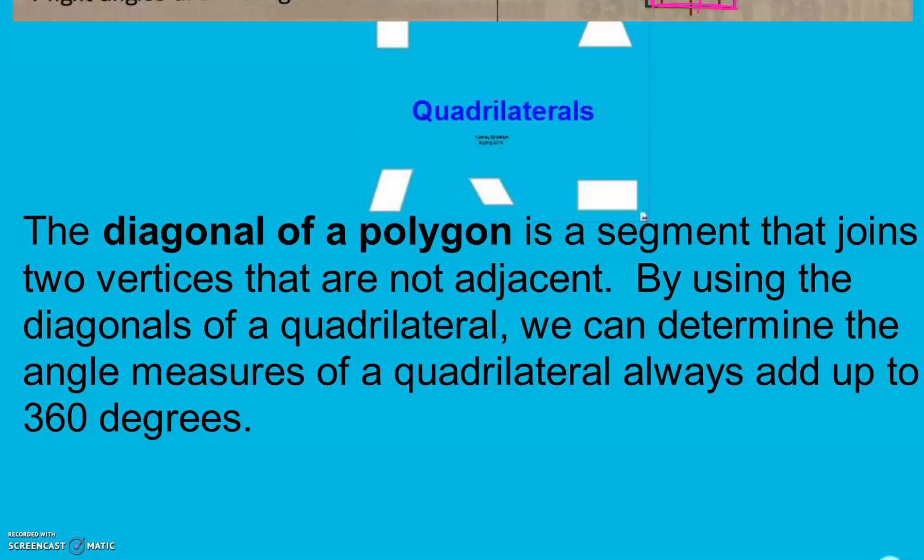Continuing on here in section 10-2, the diagonal of a polygon is a segment that joins two vertices that are not adjacent. By using the diagonals of a quadrilateral, we can determine the angle measures of a quadrilateral always add up to 360 degrees.